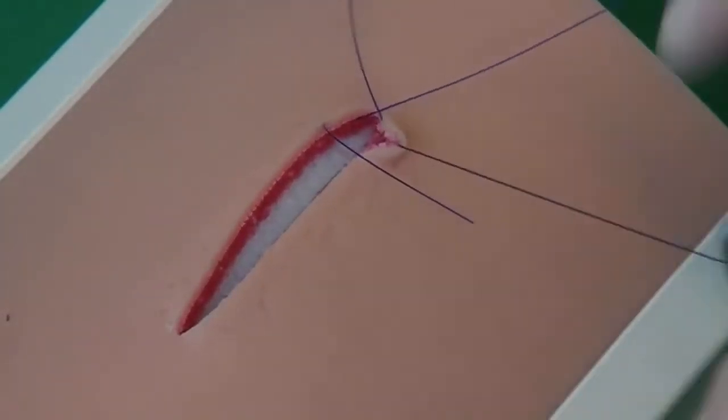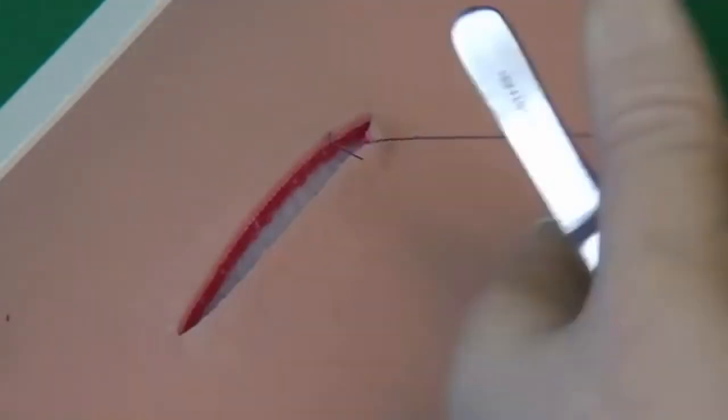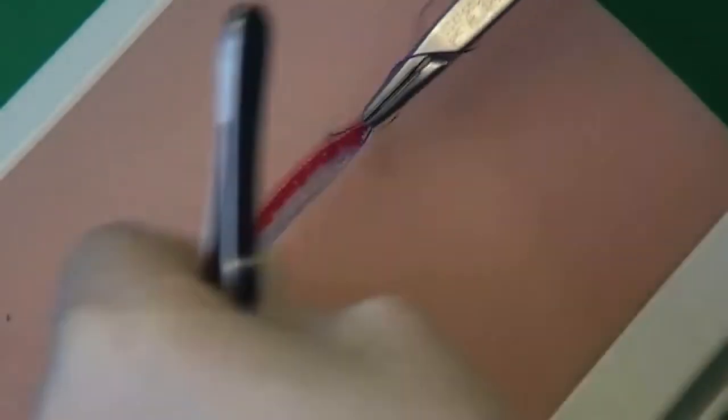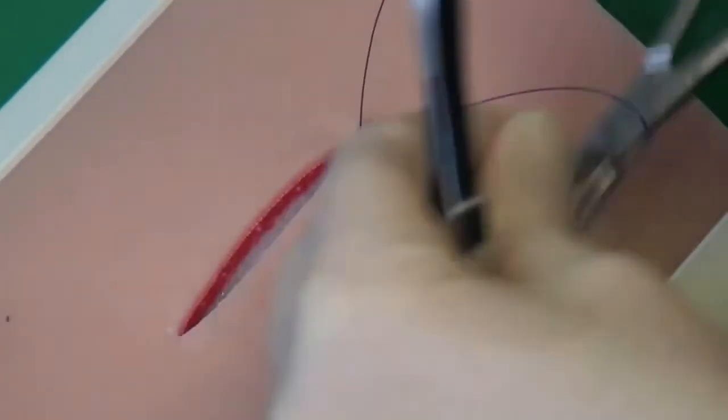The beginning of the suture is tied with a surgical knot. The number of knots depends on the type of thread. When tightening the knot, the thread is pulled in the direction of the incision so that the knot is more easily buried.